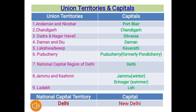Now see the Union Territories and their capitals. Those who do not have the latest edition, correct it. Number 1: Andaman and Nicobar — capital Port Blair. Next: Chandigarh — Chandigarh. Dadra and Nagar Haveli — Silvassa. Daman and Diu — Daman. Lakshadweep — Kavaratti. Puducherry — Puducherry, formerly Pondicherry. National Capital Territory of Delhi — Delhi. Number 8: Jammu and Kashmir — Jammu in winter and Srinagar in summer. Number 9: Ladakh — capital Leh. So there are nine Union Territories. We have a National Capital Territory, that is Delhi, and the capital of Delhi is New Delhi. You all memorize all Union Territories and their capital names.